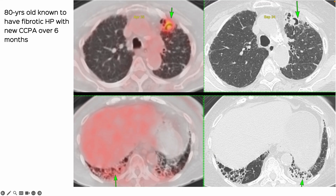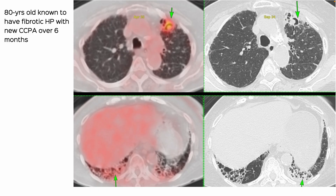Here is another patient with known fibrotic hypersensitivity pneumonitis over many years who experienced some health deterioration. In 2024 we saw a nodule arising from the wall like a scab, and by April 2025 it had become a full-blown fungal ball — CCPA. There is pericavitary fibrosis, other cysts, and pleural thickening, so this fits perfectly into CCPA.